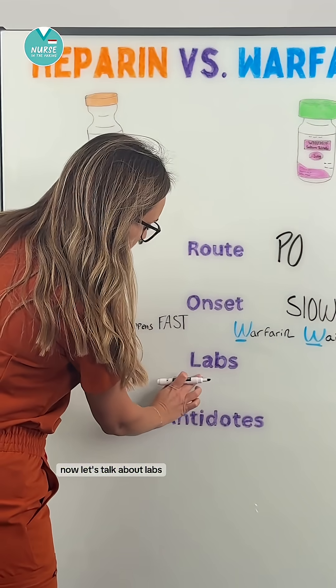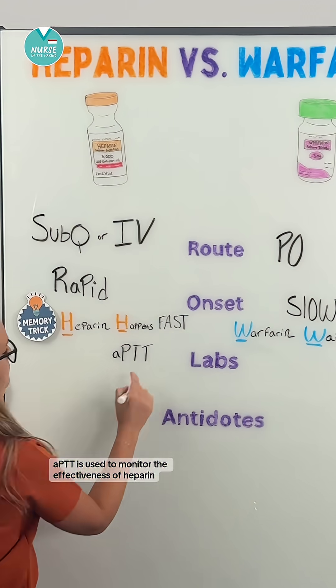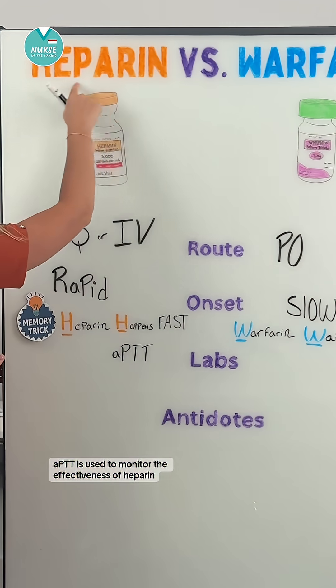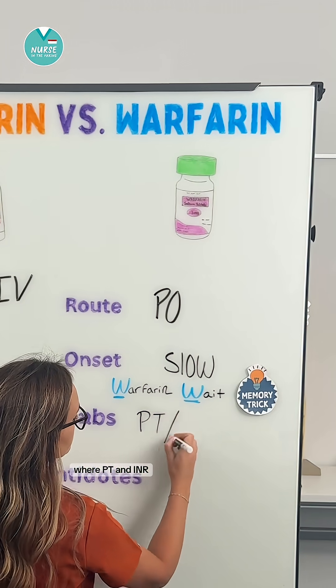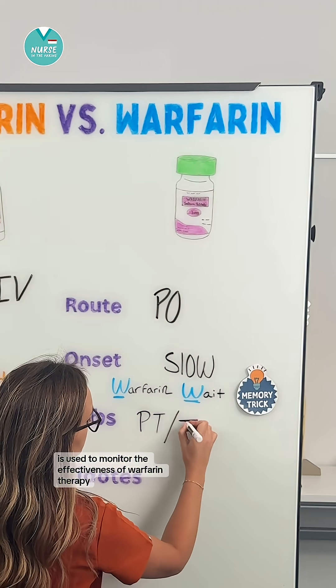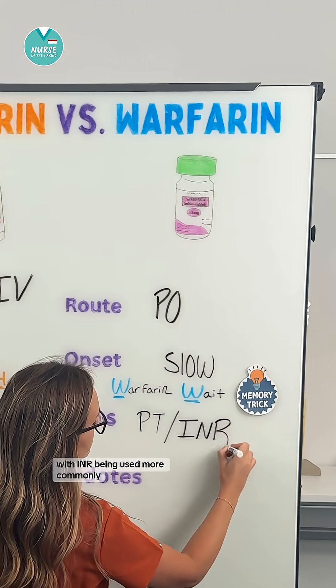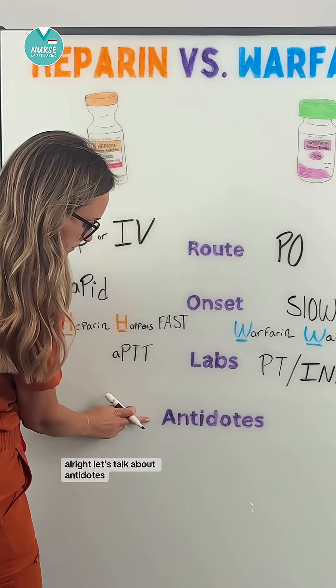Now let's talk about labs. aPTT is used to monitor the effectiveness of heparin, where PT and INR are used to monitor the effectiveness of warfarin therapy, with INR being used more commonly.